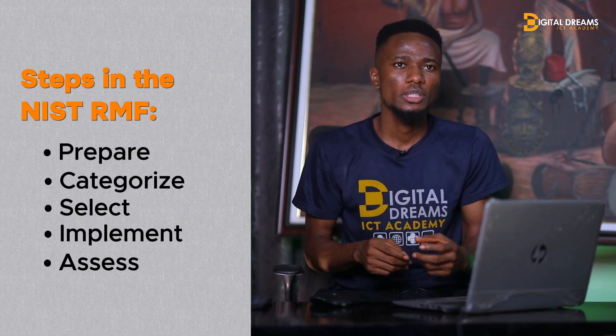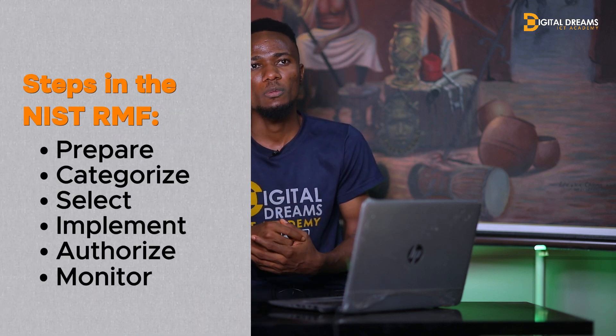The next step is Assess: determining if established controls are implemented correctly. Analysts analyze whether protocols, procedures, and controls meet organizational needs, identify potential weaknesses, and propose changes if necessary. The next step is Authorize: being accountable for security and privacy risks. Analysts may generate reports, develop plans of action, and establish project milestones aligned with the organization's security goals. The last step is Monitor: being aware of how systems are operating. Analysts assess and maintain technical operations daily, ensuring the current system supports the organization's security goals. If not, changes may be needed.